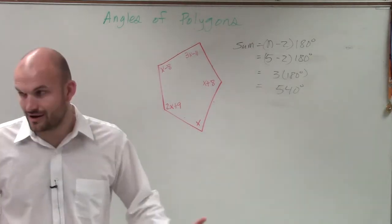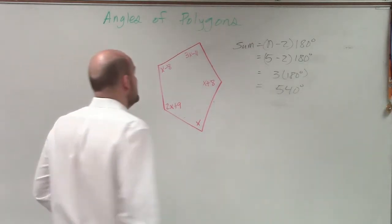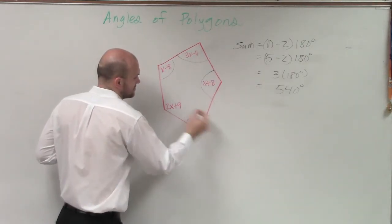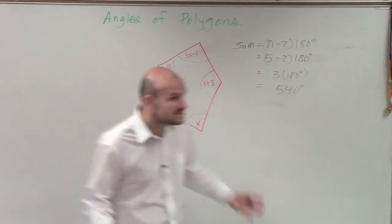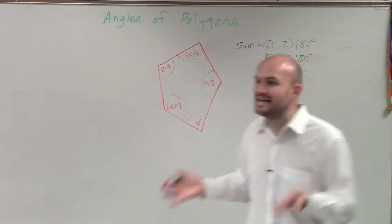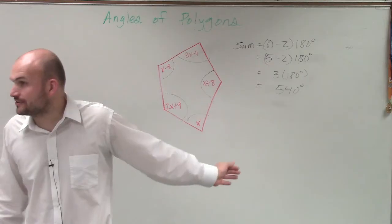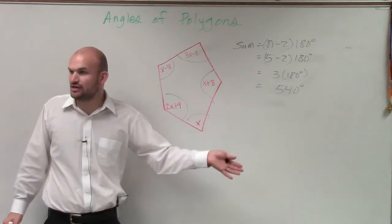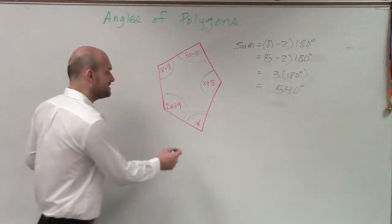OK, so there we go. 540 degrees means that is the sum of each one of these angles. The sum represents addition, meaning I need to add up each one of those angles. But you guys can see these angles aren't just easy numbers like 70 and 30 degrees. They're expressions. But that's OK.